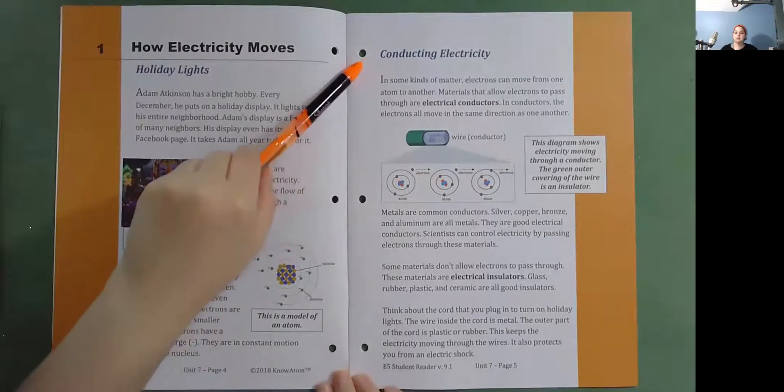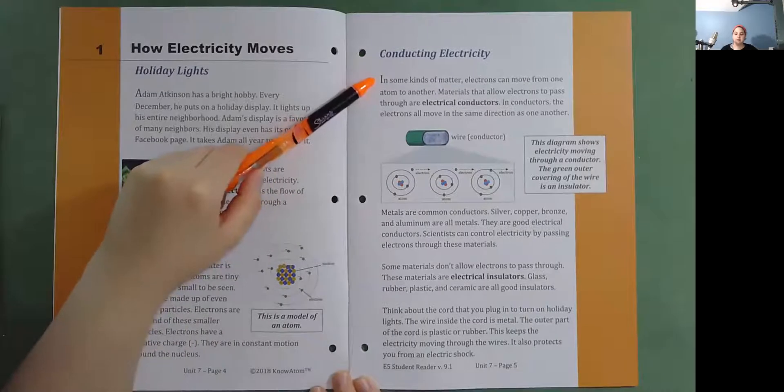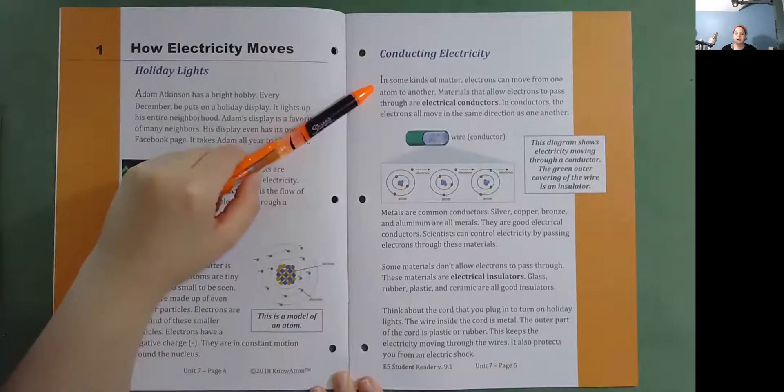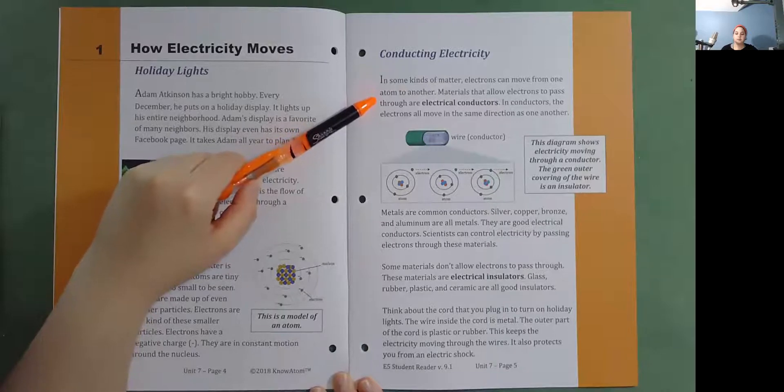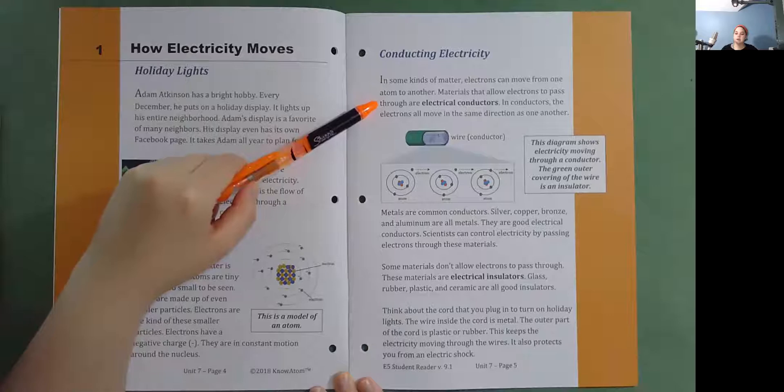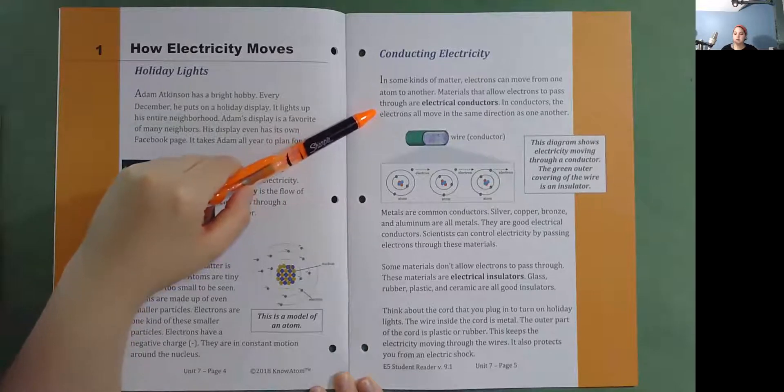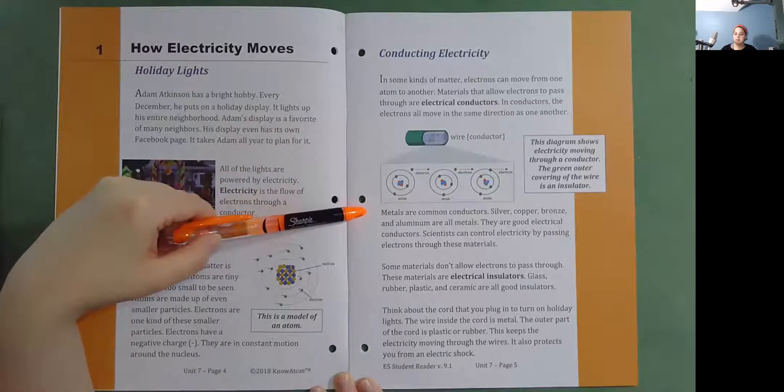Conducting Electricity. In some kinds of matter, electrons can move from one atom to another. Materials that allow electrons to pass through are electrical conductors. In conductors, the electrons all move in the same direction as one another. Metals are common conductors.